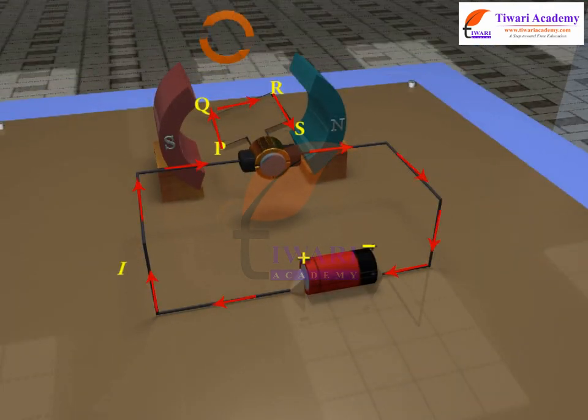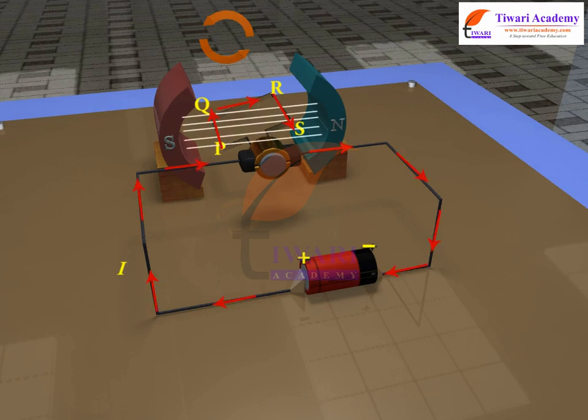I be the current flowing through the coil in the direction PQRS, and theta be the angle which the plane of the coil makes with the direction of the magnetic field.